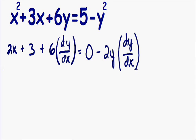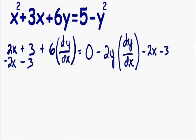After you derive the equation, you want to get all the non-dy/dx terms on one side and all the dy/dx terms on the other side. I'm going to bring all the non-dy/dx terms to the right side. The 2x term is a non-dy/dx term, so I'll subtract 2x from both sides. The positive 3 is also a non-dy/dx term, so I'll subtract 3 from both sides. After simplifying, the 2x and positive 3 cancel out, leaving only 6 dy/dx on the left hand side.